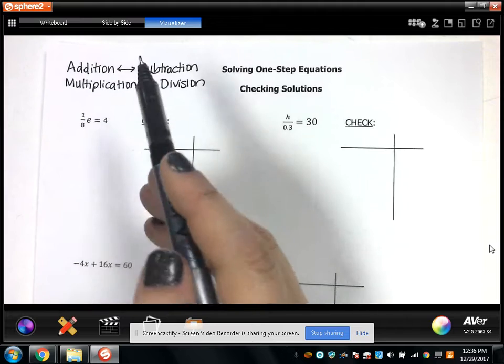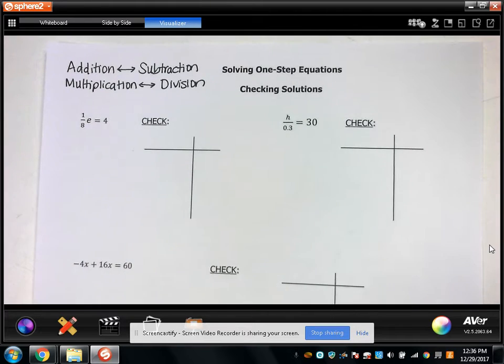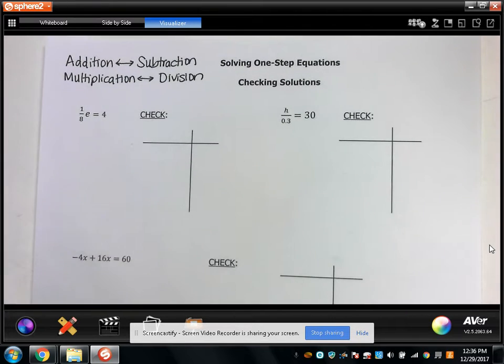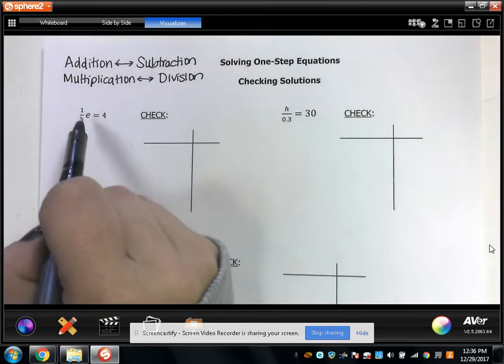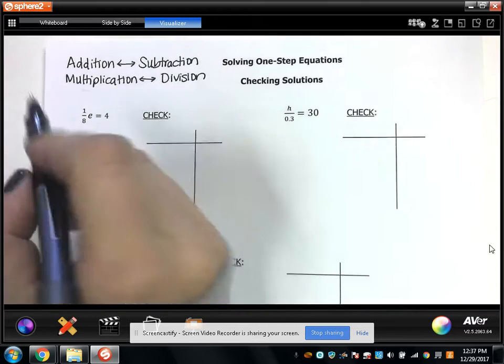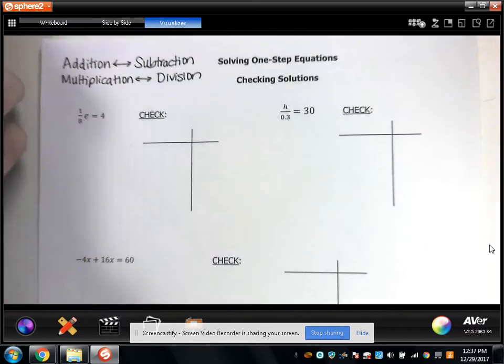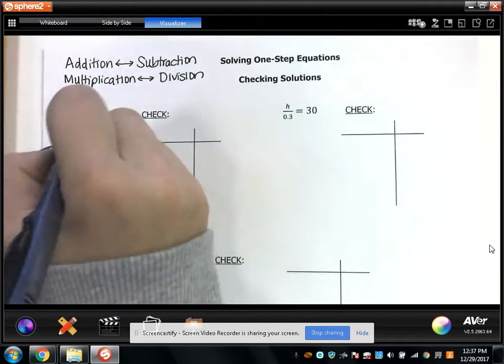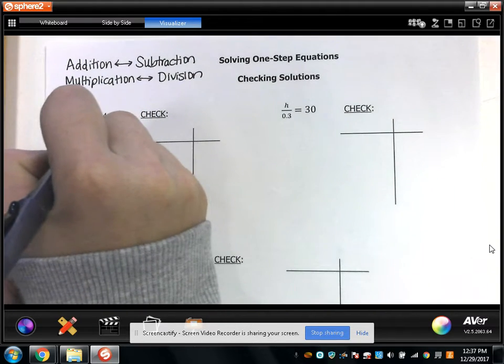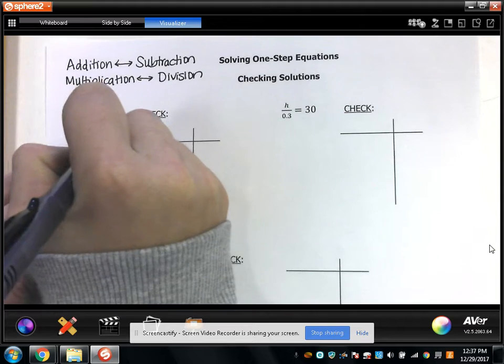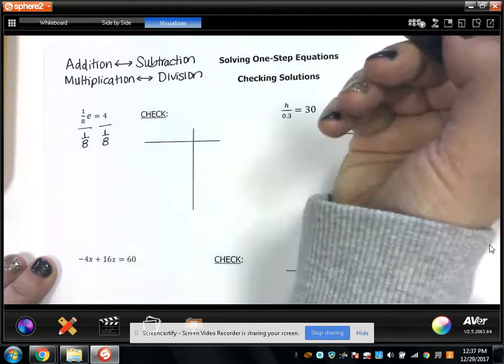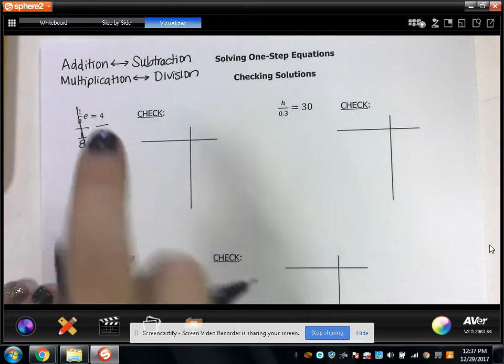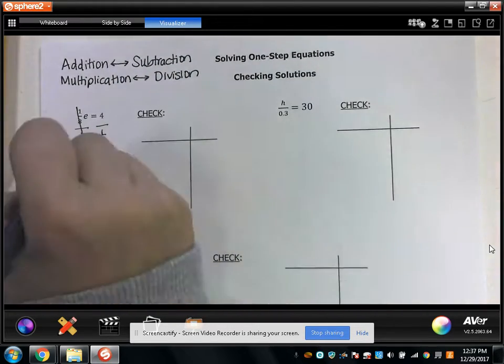If you know that, you should be able to solve this pretty easily, especially since you can use a calculator. So this says 1 eighth times E equals 4. E is being multiplied by 1 eighth. What's the opposite of multiplying by 1 eighth? You could divide by 1 eighth. 1 eighth divided by 1 eighth gives you 1. So on this side of the equation you're left with 1 E, or just E.